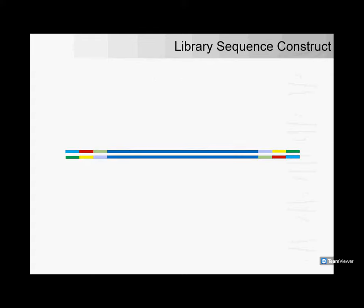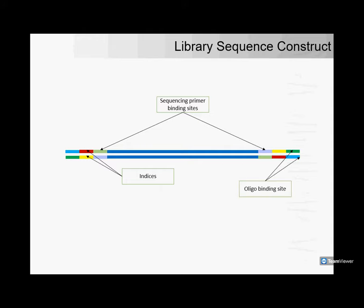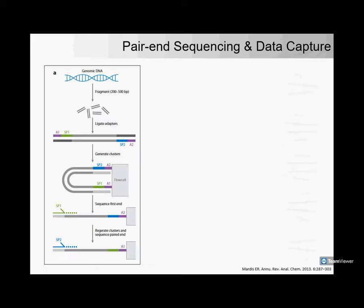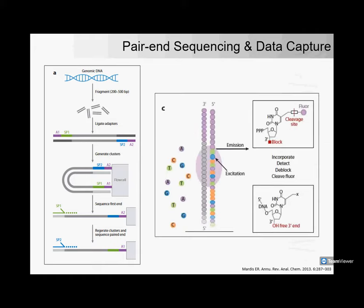The paired-end sequencing and data capture is a standard Illumina process — many of you are aware — going through bridge amplification to create polony clusters, followed by a standard non-dideoxy terminator sequence-by-synthesis reaction where individual bases get incorporated on the flow cell clusters and are recorded. The sequence is then inferred from that optical data.